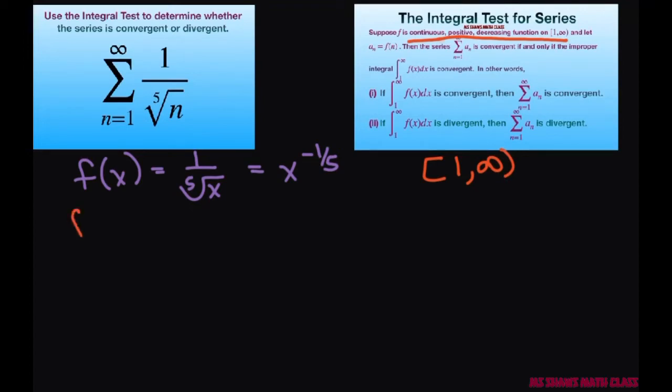Therefore we're going to write this as the integral from 1 to infinity of x to the negative 1/5th power dx. And the integral test states we can write this as a limit as t approaches infinity from 1 to t of x to the negative 1/5th power dx.